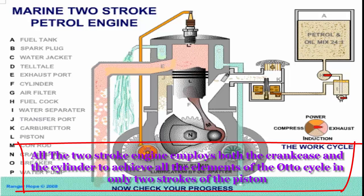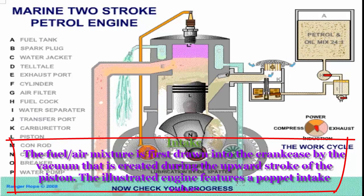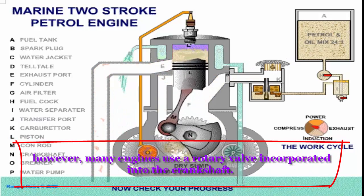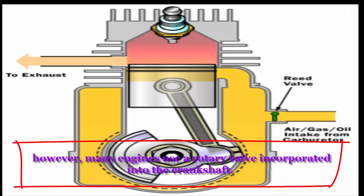Intake: The fuel-air mixture is first drawn into the crankcase by the vacuum that is created during the upward stroke of the piston. The illustrated engine features a poppet intake valve; however, many engines use a rotary valve incorporated into the crankshaft.